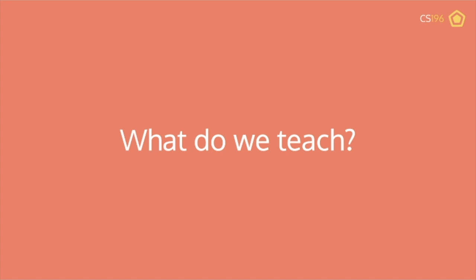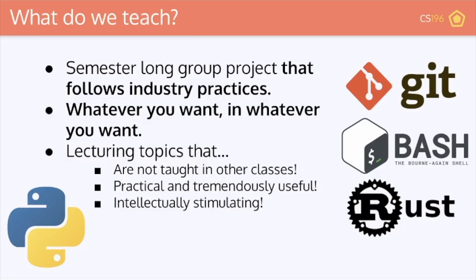So what can you expect to learn if you take CS196? The centerpiece of this course is a semester-long group project that follows industry practices. The cool thing about it is that it can be about whatever you want — whatever big ideas that you might have — and you can implement them in whatever way you want, whether it's a mobile app, web app, video game, machine learning model, whatever it is. We allow you to use whatever tools and technologies, and we give you a project manager from course staff to help you facilitate and guide you through the project as you go through the semester.